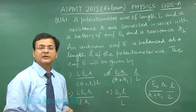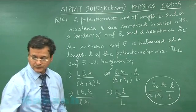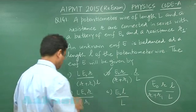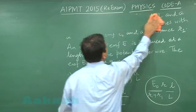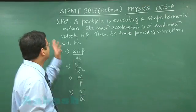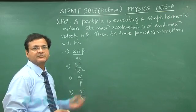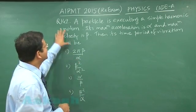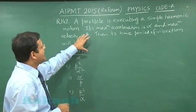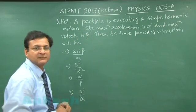Now let us switch over to next question, that is question 142. This is a straightforward question based on simple harmonic motion. It is a formula based question. They are saying that in this simple harmonic motion, the maximum acceleration is alpha.